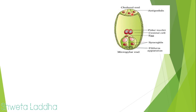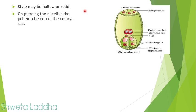This is a revision of the embryo sac. At the chalazal end there are three antipodals. At the micropylar end are two synergids, and behind the synergids is the egg — all are haploid. In the center you can see polar nuclei fused to form the secondary nucleus, which is diploid. The style of the pistil may be hollow or solid, and the pollen tube passes through it, then pierces the nucellus and reaches the embryo sac.